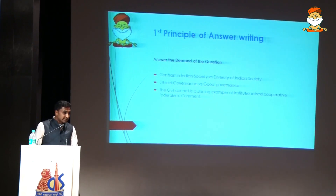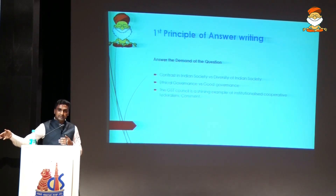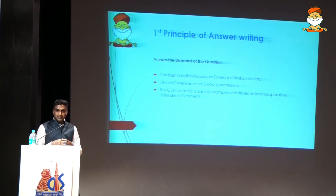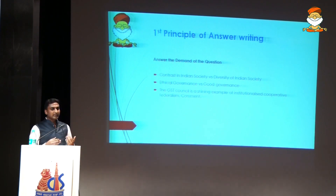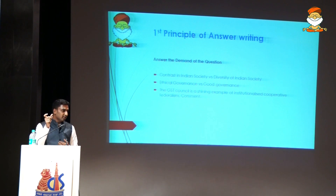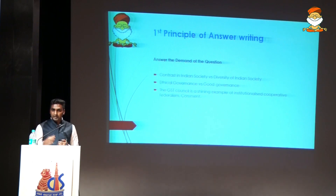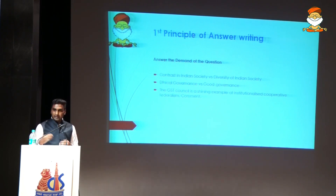In the society part of GS1, you can bring in the trusteeship model — but be specific, because trusteeship is more concrete in GS3 economics. For society, you can mention women's empowerment and social empowerment. Article 46 of the Constitution promotes the educational and economic interests of weaker sections, especially SCs and STs, and ensures no injustice is done to them. The DPSP also talks about cow slaughter, so Gandhiji can be brought in the society part.